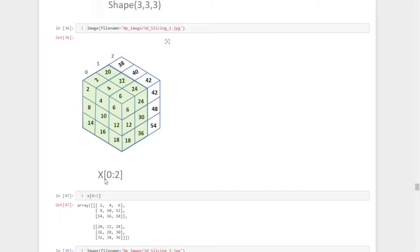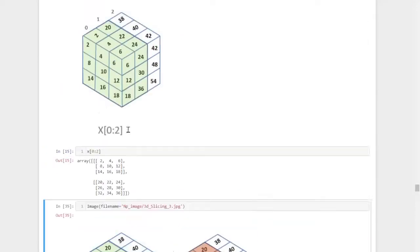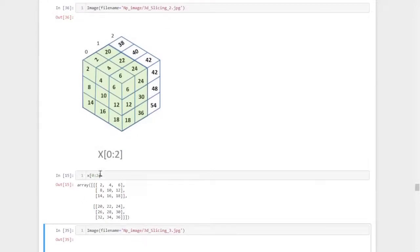So we need to trim out those two layers. The command for that is x of 0 colon 2. So we got those two layers here. These two layers we trimmed out from the NumPy array.